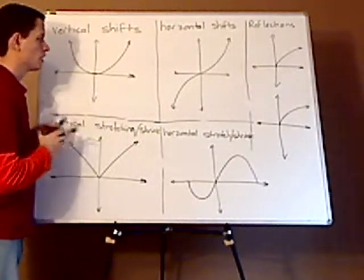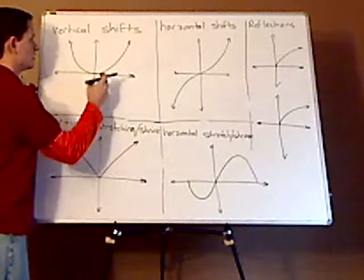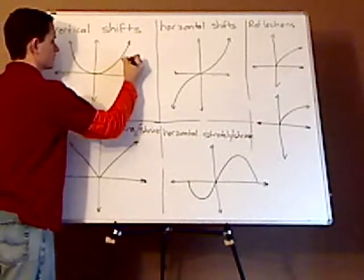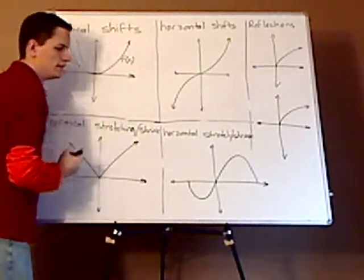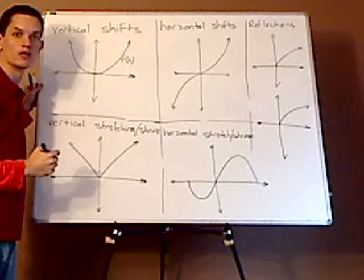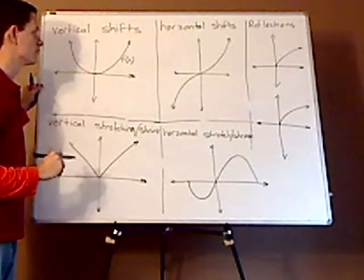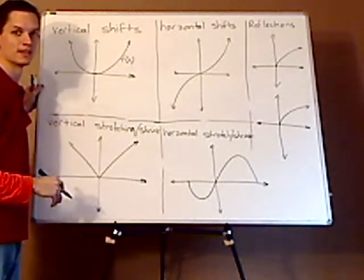Vertical shifts are probably the easiest. If this is your f of x, and remember, these transformations are universal, so they apply to any basic function.